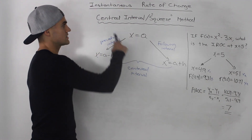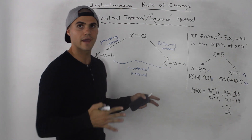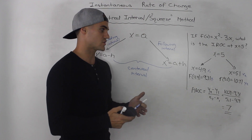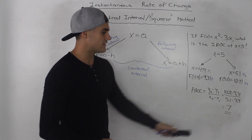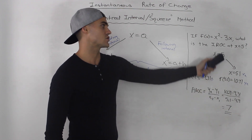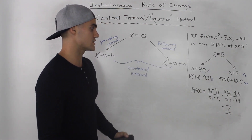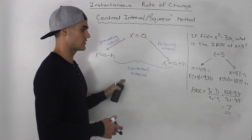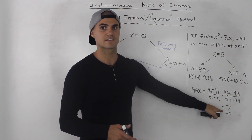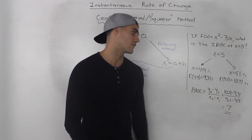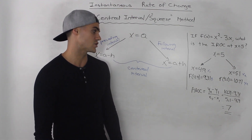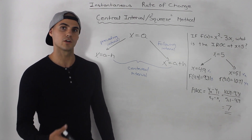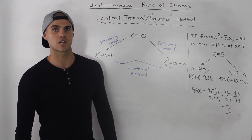Remember, when using the centered interval method, it's still only an approximation. You can't be fully sure that you have the exact instantaneous rate of change at x equal to 5. The method we're going to do next — using the difference quotient — will allow us to find exactly what the instantaneous rate of change is.